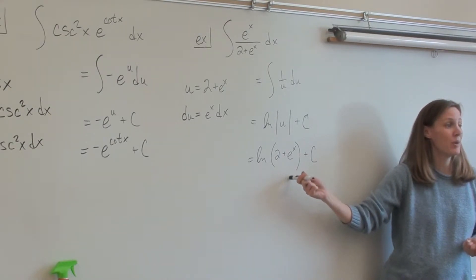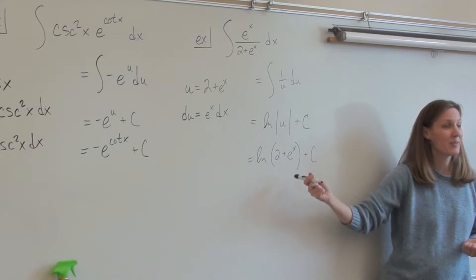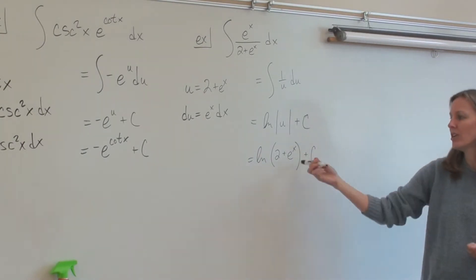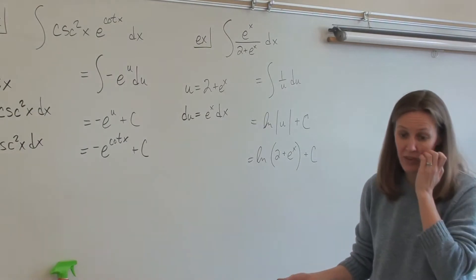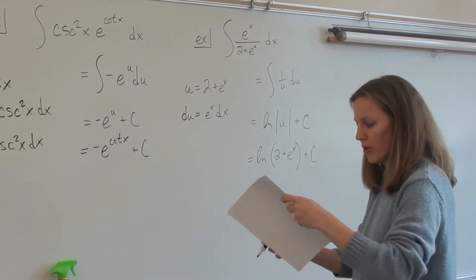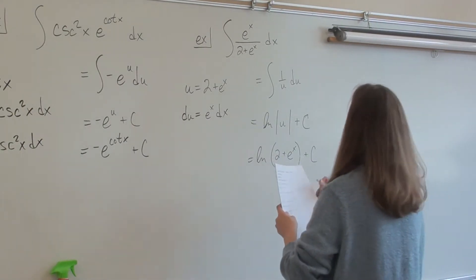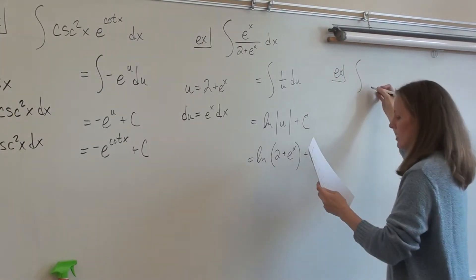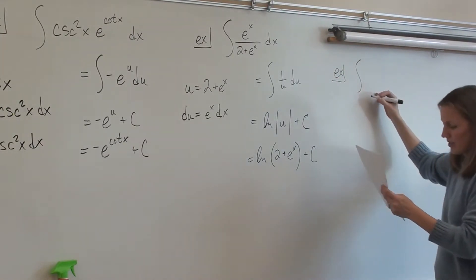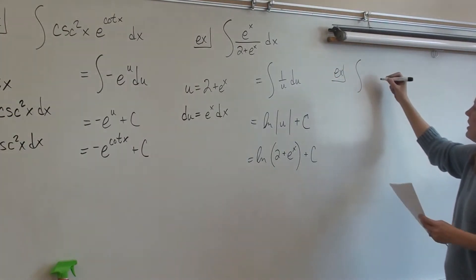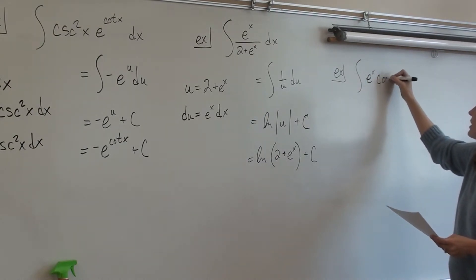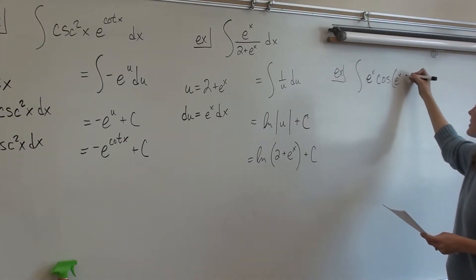Because e to the x is always positive, that comes in handy when considering signs. Knowing that e to the x is always positive will come in very handy. Let's do a couple more examples. How about e to the x times the cosine of e to the x?